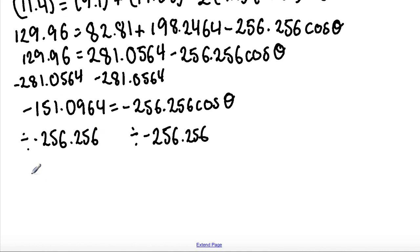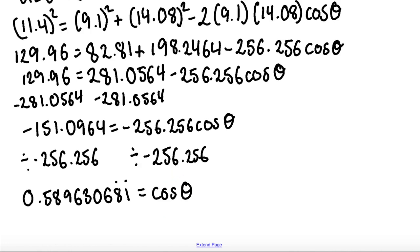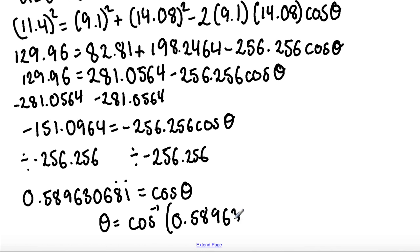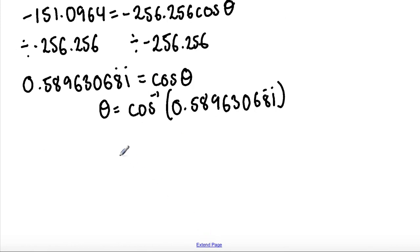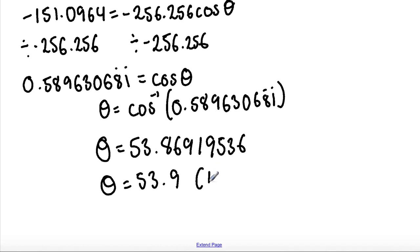This gives us 0.589630681 equals cos theta. To find the value of theta, we use the inverse cosine: theta equals inverse cos of 0.589630681, which gives theta equals 53.86919536. Rounding to one decimal place, theta equals 53.9 degrees.